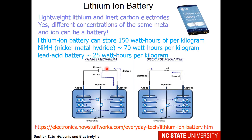When charging a lithium ion battery, electrons flow into the anode, which attracts the lithium ions. We get a greater concentration of lithium ions on the left side than on the right side. Then, when we want to use the battery, the lithium ions start migrating from left to right, and in doing so, release electrons from the anode.